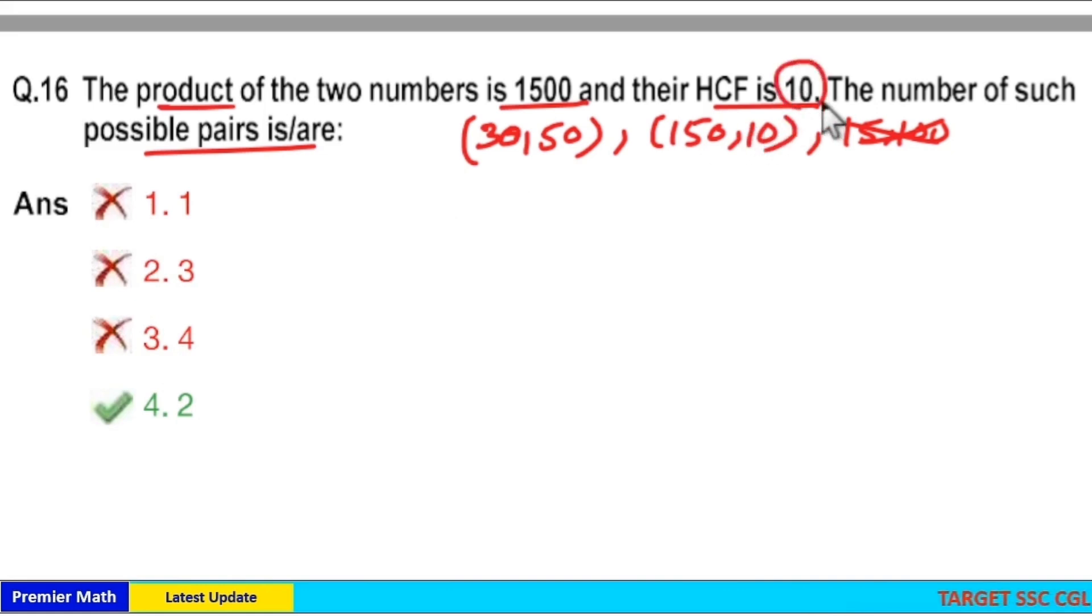Here HCF is 10 means you can take 10x and 10y as two such numbers. Now, product is equal to 1500 means xy is equal to 15 here.